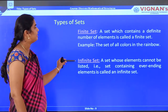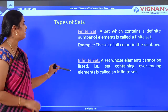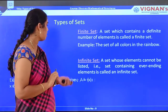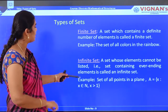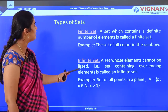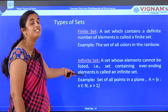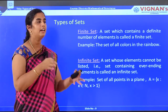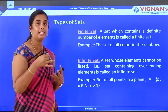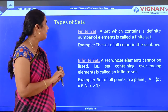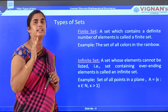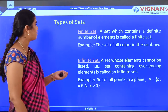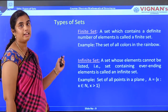Next comes the infinite set. The set whose elements cannot be listed — that is, a set containing ever-ending elements — is called an infinite set. For example, the set of all points in a plane, or the set of all numbers greater than 1. On a plane we can mark infinitely many points, and natural numbers have no defined end, so both are infinite sets.